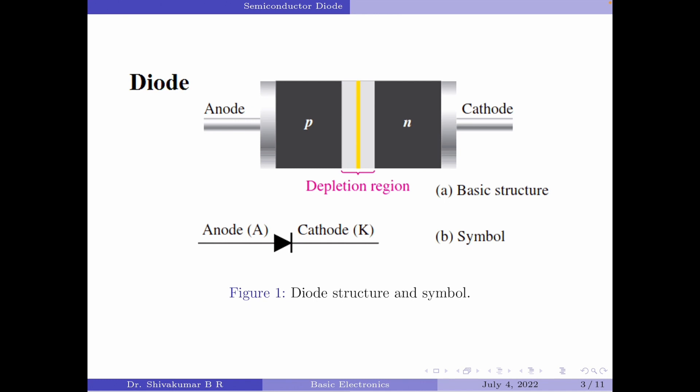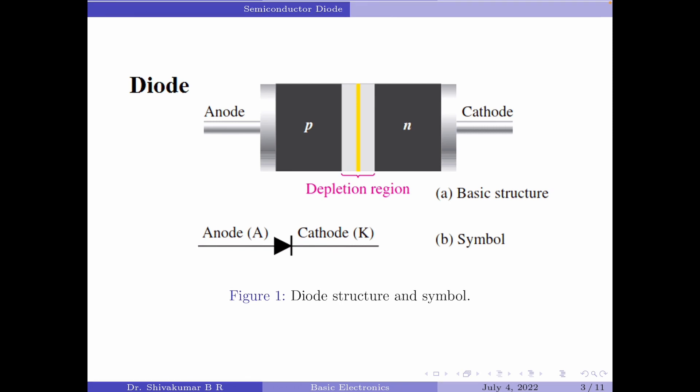Figure 1 here indicates the generic structure and the symbolic representation of a semiconductor diode. As can be seen here, a diode has two terminals.